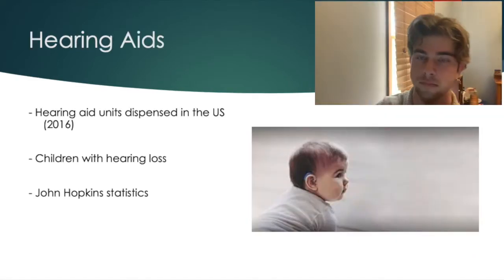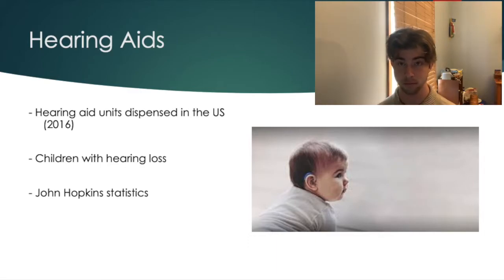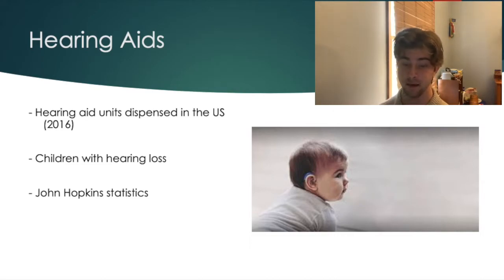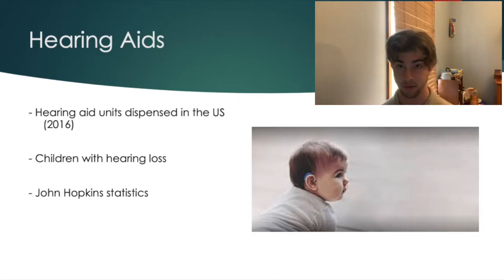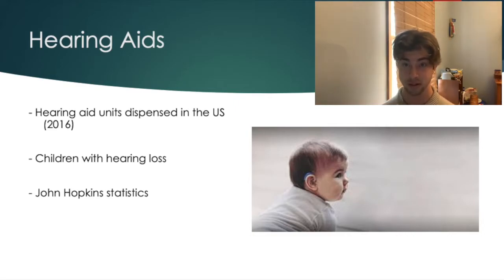The next area is hearing aids. Hearing aids are able to increase hearing for a lot of people with reduced hearing. Statistics: 15% of school-age kids from 6 to 19 have some degree of hearing loss; 3.65 million hearing aids were distributed in the United States in 2016; and according to Johns Hopkins, approximately 38.2 million Americans — 14.3% — report some case of hearing loss. This shows that there are a lot of people with hearing disability. Hearing aids allow people to actually hear more, and hearing is obviously important to social interactions because if you're not able to hear someone speak, you're not able to socially interact.